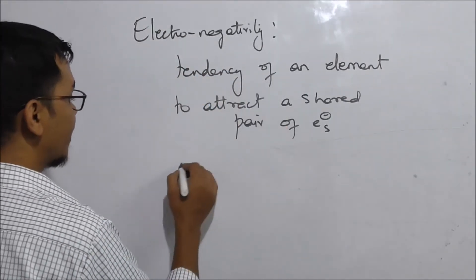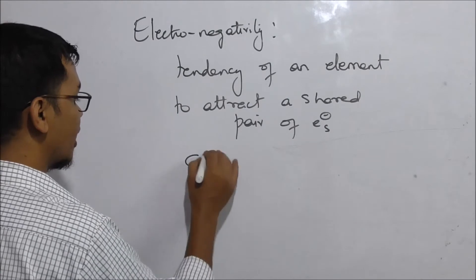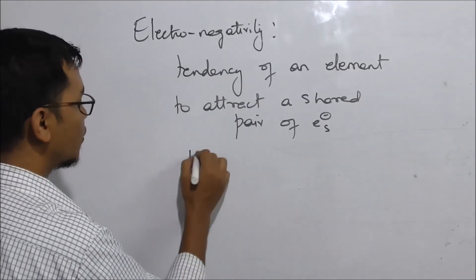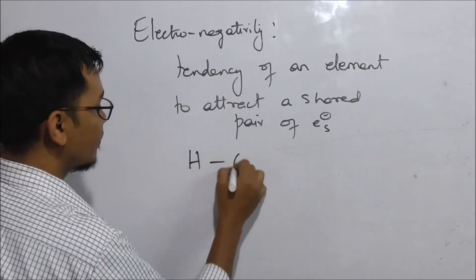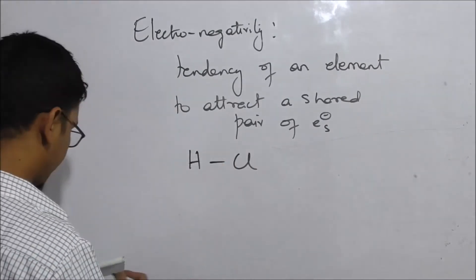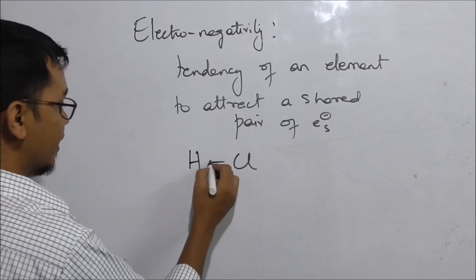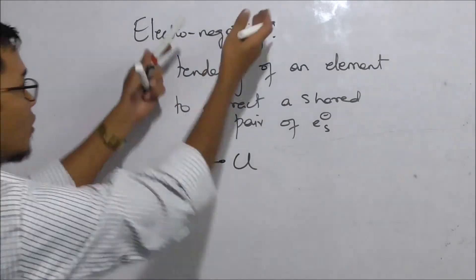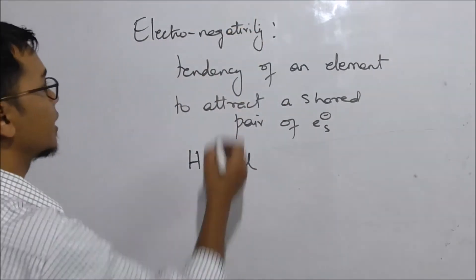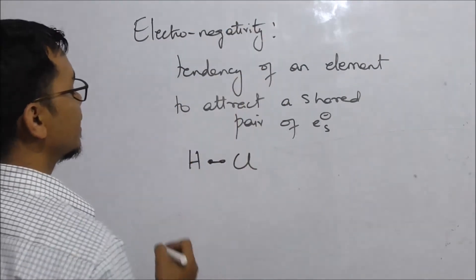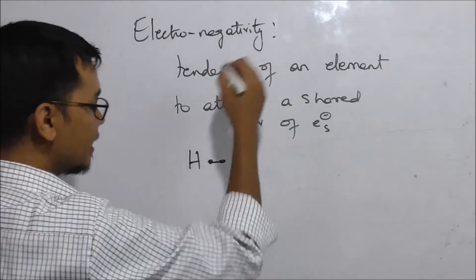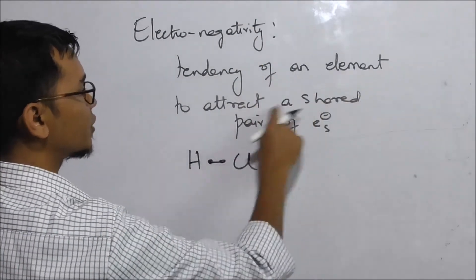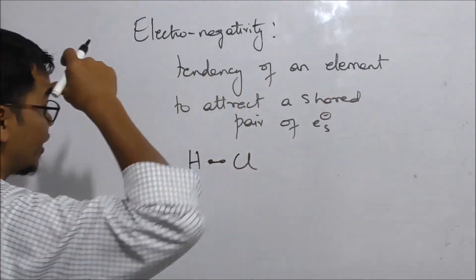You can see the bonding between hydrogen and chlorine. The bonding relates to the concept of electronegativity. Electronegativity is the tendency of an element to attract a pair of electrons.